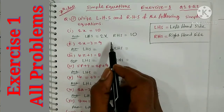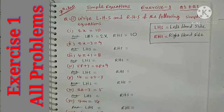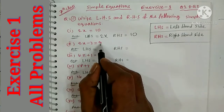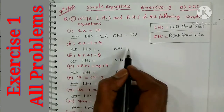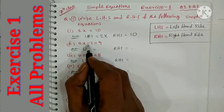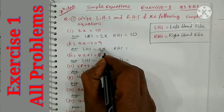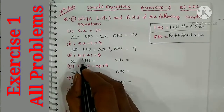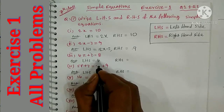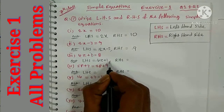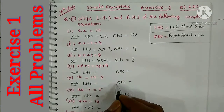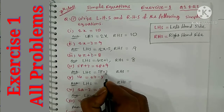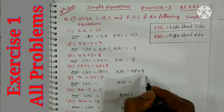Now let's get started with the questions. For the next equation, the left side is 2x minus 3, so LHS is 2x minus 3, and the right side is 9, so RHS is 9. For the next one, left side is 4z plus 1, RHS is 8. Then we have 5p plus 3 on the left and 2p plus 9 on the right.